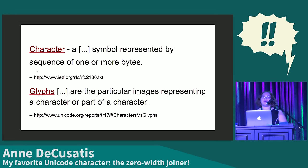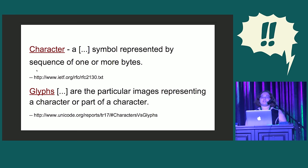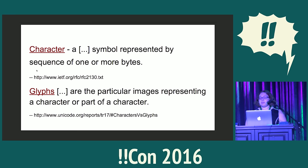I'm going to be using the word 'character' a lot. There's a very technical definition in a Unicode technical report that I've linked, but I just want to keep things simple. When I say character, I'll be referring to a sequence of bytes which represents part of a letter or symbol, and I'll be using the terms character and code point more or less interchangeably. When I say glyph, I'll be referring to the visual representation of the character.